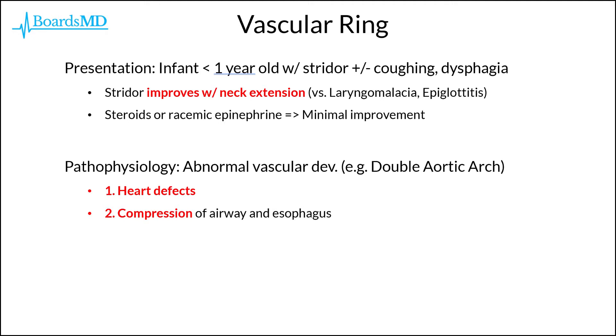Moving on to the vascular ring, this is going to present in an infant who is less than one year old, classically with stridor, and in many cases coughing as well as dysphagia.